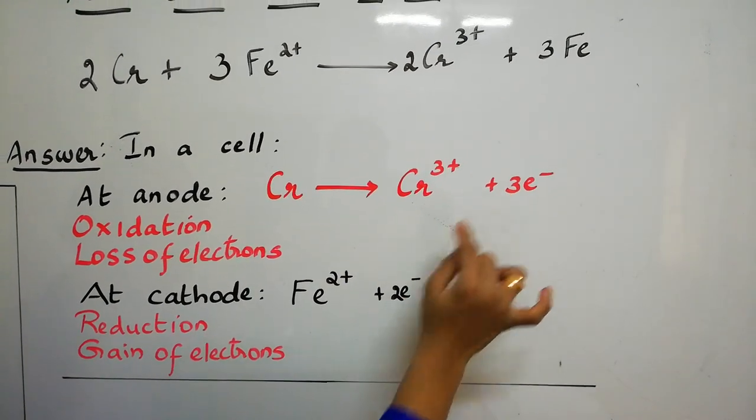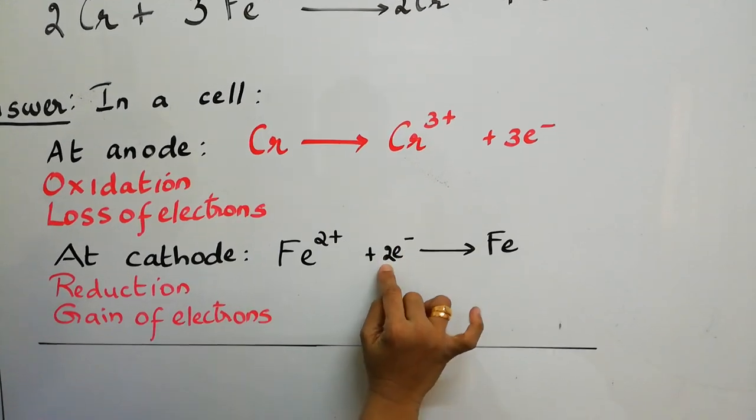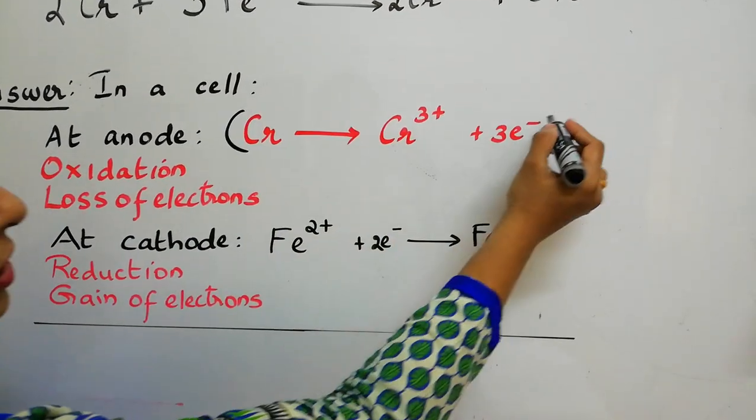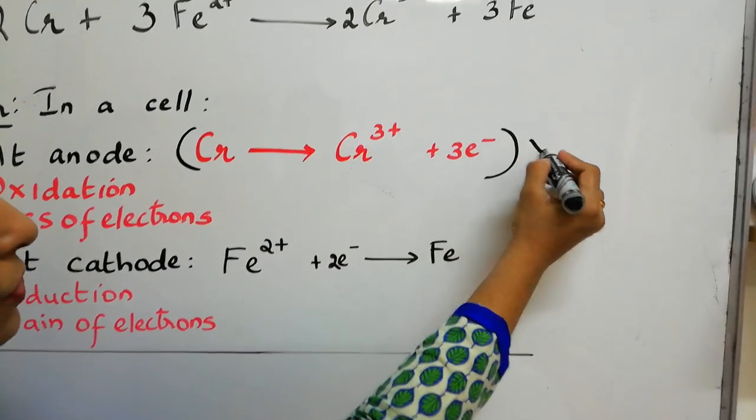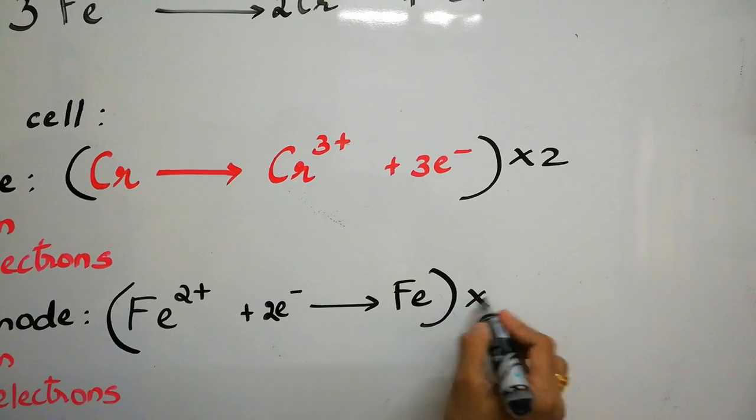Now, closely observe these 2 electrons. Are they same? We need to make them, the total electrons, by multiplying the oxidation reaction with 2 and similarly, the reduction reaction with 3.